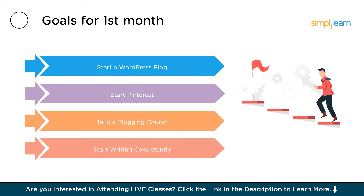Finally, the most important step is to start writing consistently. Regularly producing high-quality, valuable content is the cornerstone of a successful blog. It builds your audience, improves SEO, and establishes your authority in your niche.